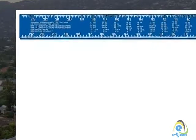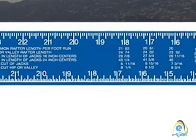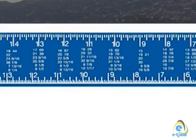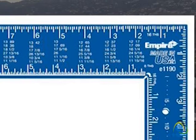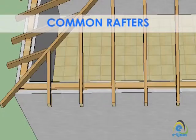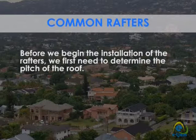For this exercise, we will use the rafter table on the framing square to determine the length of the common rafter and to lay it out. The framing square may have one or two types of rafter tables on the blade. One type gives both the line length of any common rafter per foot of run and the line length of any hip or valley rafter per foot of run. The difference in length of the jack rafter spaced 400mm or 600mm on center is also shown in this table. The other type gives the actual length of a rafter for a given pitch and span. Before we begin the installation of the rafters, we first need to determine the pitch of the roof.